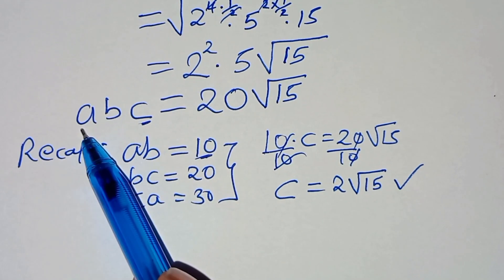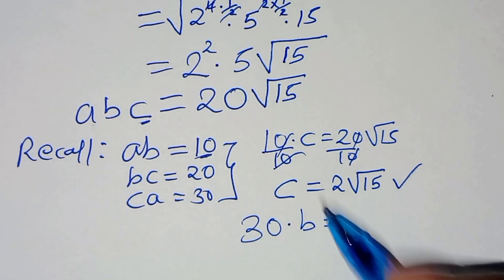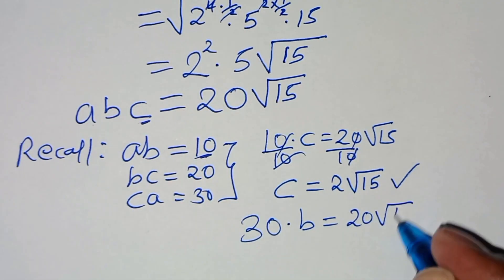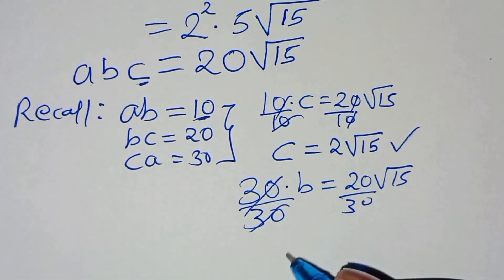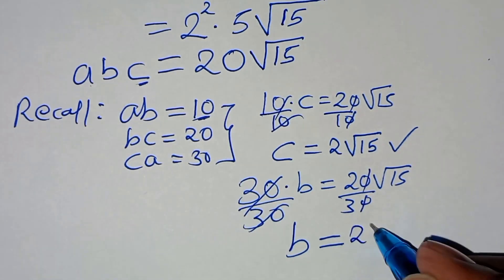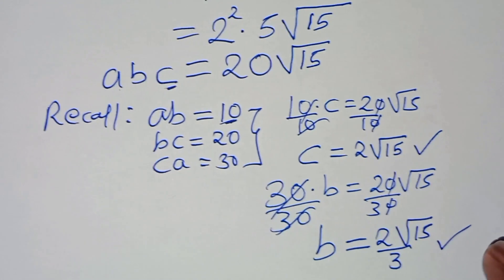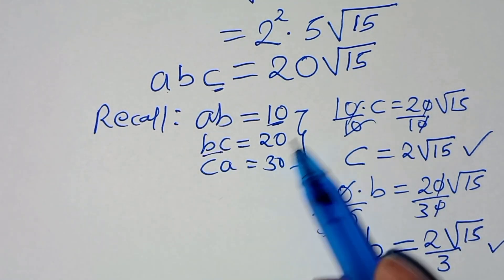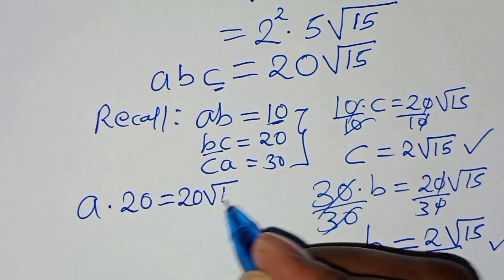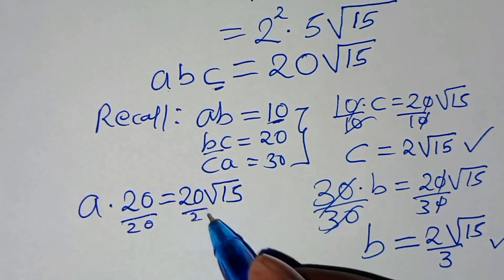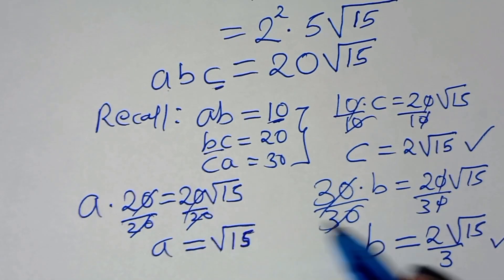Next, we calculate the value of b. Given that a times c equals 30, we have 30 times b equals 20√15. Dividing both sides by 30, b equals 2√15 divided by 3. Then for a: b times c equals 20, so a times 20 equals 20√15. Dividing both sides by 20, a equals √15.